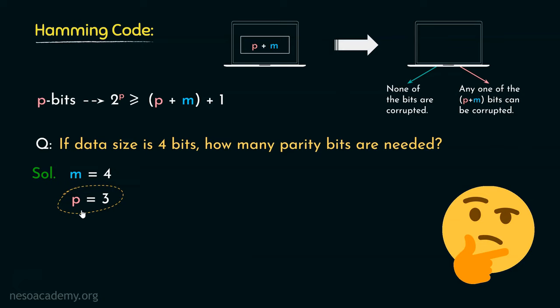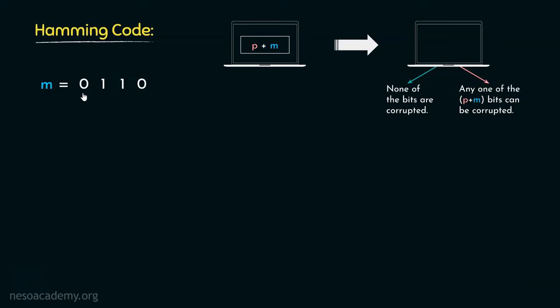Now the question is how these parity bits are going to handle this entire 7 bits of data. Say we have a message of 4 bits: 0, 1, 1, 0. Let's name the bit places m1, m2, m3 and m4. For a 4 bit message we will be needing 3 parity bits, and we name them p1, p2 and p3. So altogether the transmitted data will have 3 plus 4, that is 7 bits.